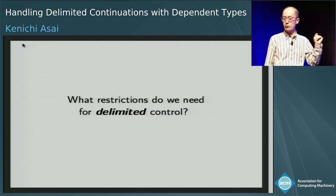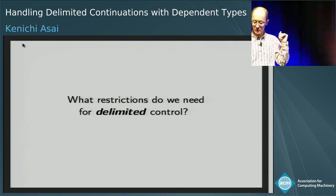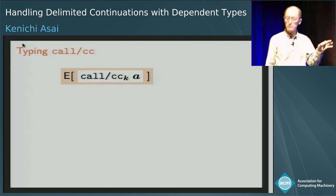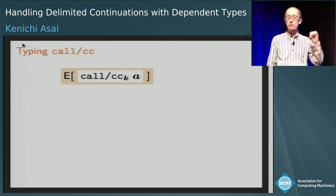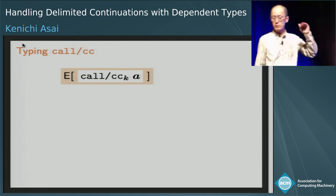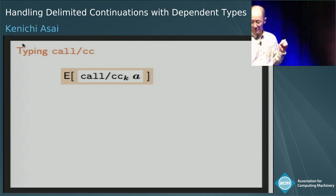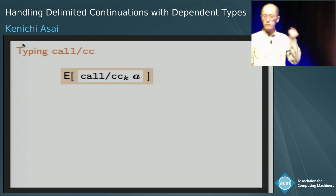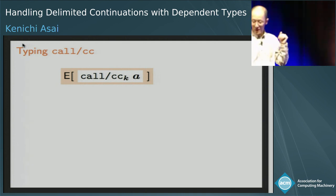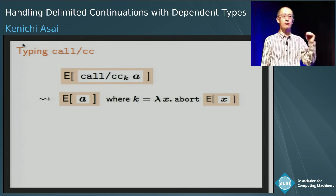Then what restriction do we need for delimited control? To answer this question, we compare undelimited control and delimited control from the perspective of types. Suppose we have a CC expression surrounded by a context E. According to the call-by-value operational semantics, we evaluate A in the context A, where we can use K, which is the function representation of the context E.